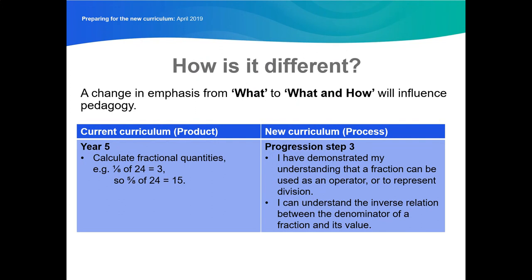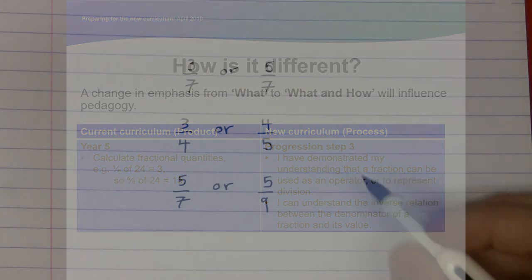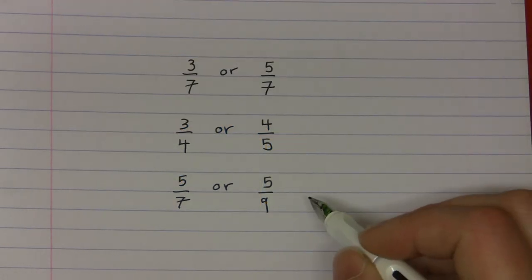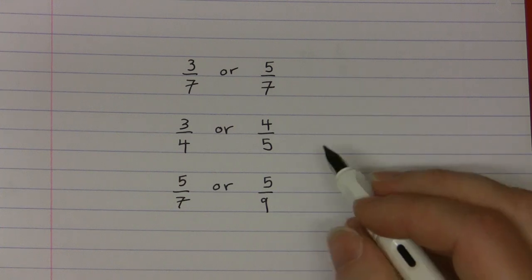The second statement on the slide about understanding the inverse relation between the denominator of a fraction and its value is about being able to compare the size of any two fractions. In research carried out by Dylan William, 14 year olds in England were asked to select the largest fraction out of the following pairs.